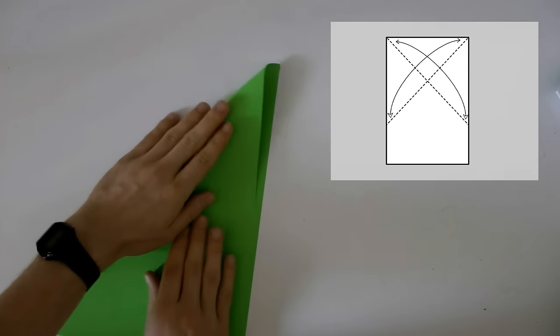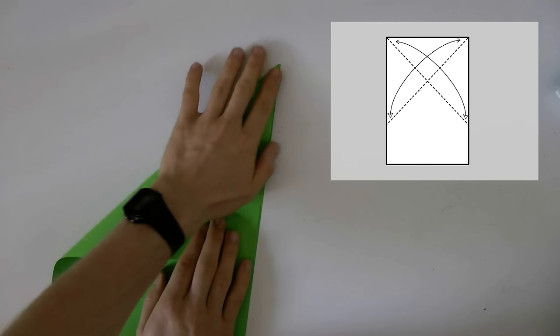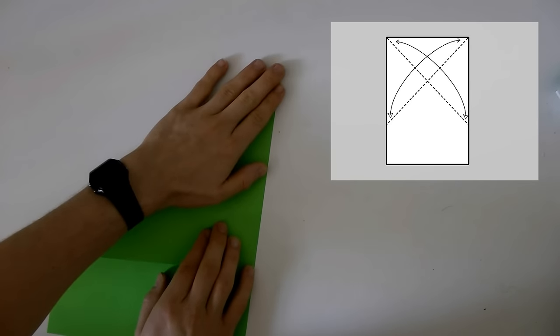First of all, fold both diagonals, the short edge to the long edge in both directions. You see I have some problems here with falling under the camera, but...